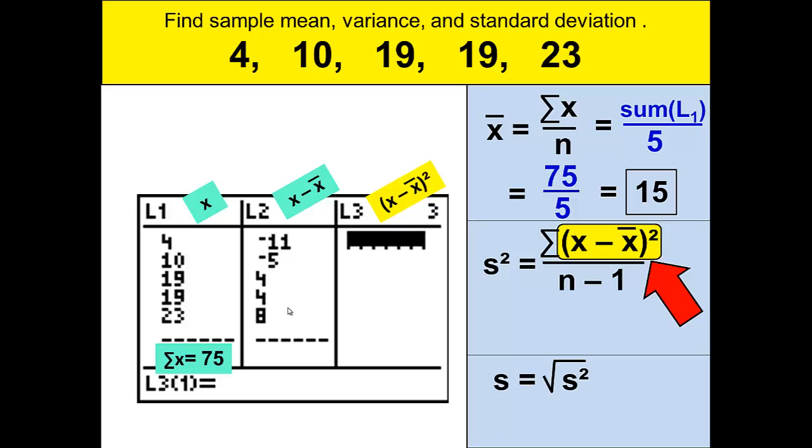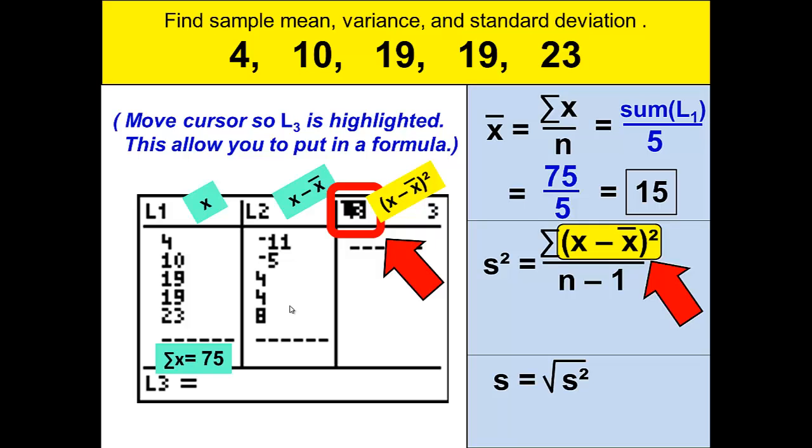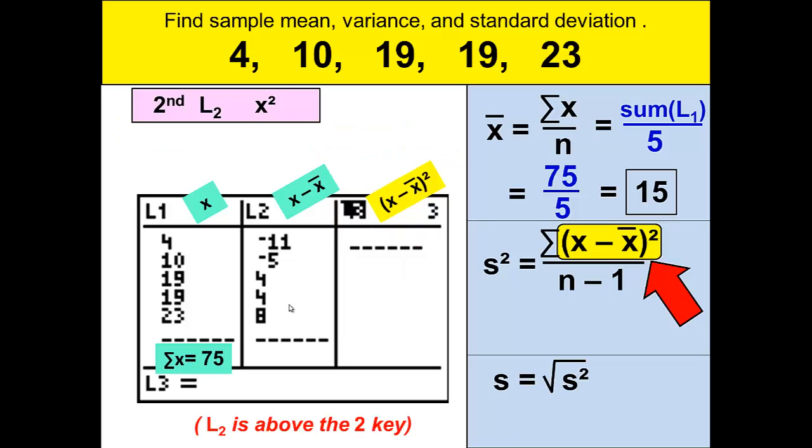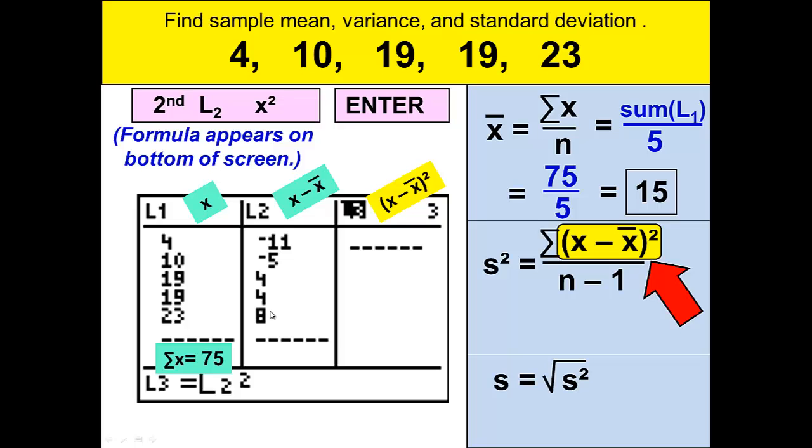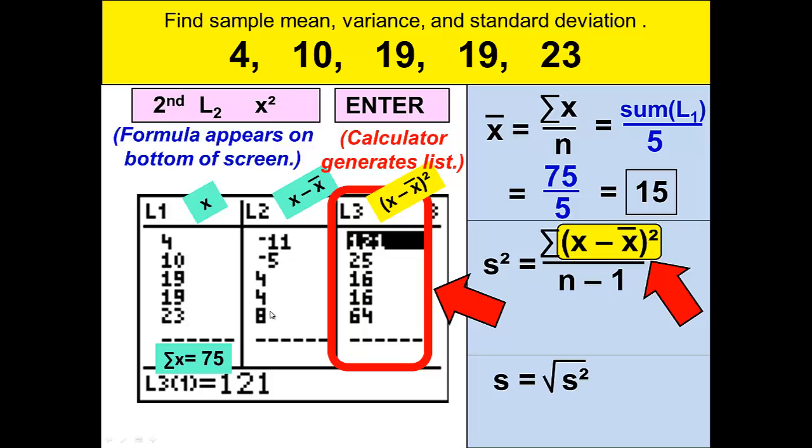So list 3 will be (x - x̄)². We'll move our cursor so L3 is highlighted. This allows you to put in a formula. You will press 2nd, L2, and then the squared button which looks like x². This will take all of L2 and square each value. Again, notice that the formula appears at the bottom of the screen. When you press enter, all of those numbers in L2 are squared and appear in L3.